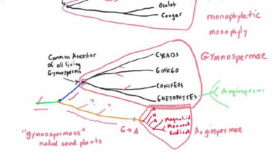We're not going to worry about that picture because it's not true. Looking at our working tree, we actually have the Gymnospermi being a legitimate monophyletic taxon if we don't include the stem gymnosperms. So a clade is both united by a common ancestor and must contain all of the living and extinct descendants from that defining common ancestral species.